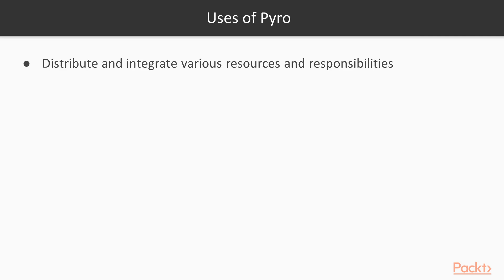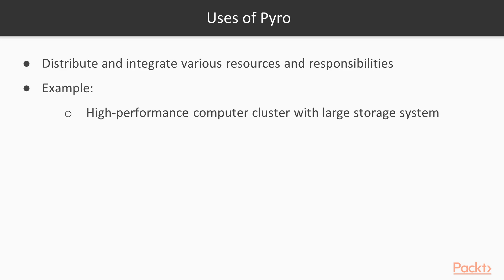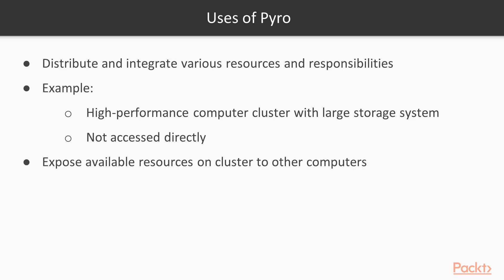There are lightweight client libraries also available for other languages like .NET, Java, etc. Pyro can be used to distribute and integrate various kinds of resources and responsibilities — computational resources, informational resources, business logic, etc. An example would be a high-performance computer cluster with a large storage system attached to it. Usually this is not accessed directly; rather, smaller systems connect to it and feed it with jobs that need to run on the big cluster.